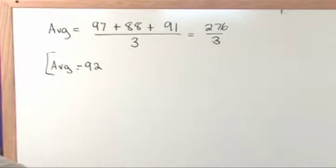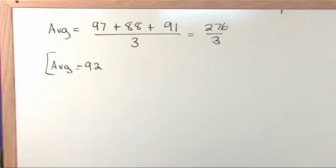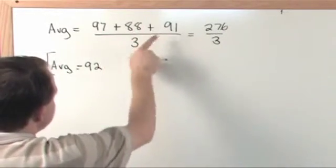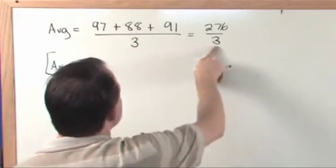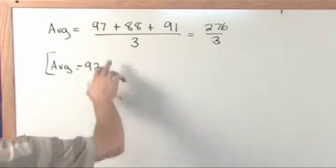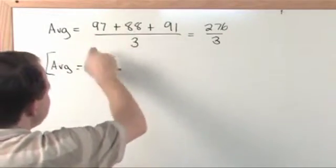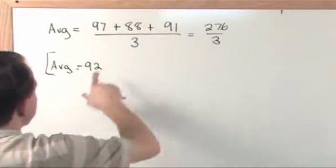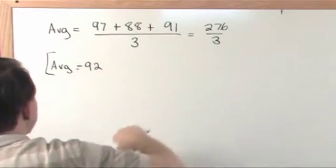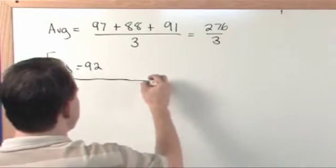The average is 92. That's the definition of an average, and that's why I started out this section with this kind of problem — so you can see all you have to do is add the three grades together, divide by the number, and that will give you the average. Notice that this average is kind of like a middle of the road. 97 is the highest, 88 pulls it down a little, and the average comes out to 92.